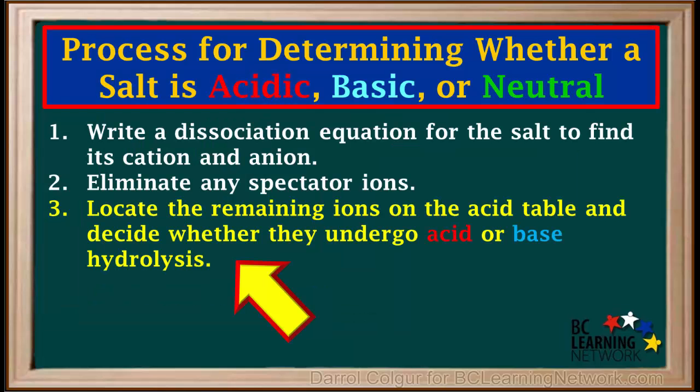Once we have eliminated the spectator ions, the third step is to locate the remaining ion or ions on the acid table. If an ion is not a spectator ion, it means it must undergo either acid or base hydrolysis, or both.